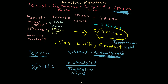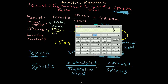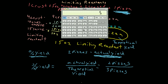Percent yield equals the actual yield over the theoretical yield. In this experiment, I actually made two pizzas, and in theory I could have made three pizzas if I'd followed the equation perfectly. Dividing those two numbers gives the percent yield.